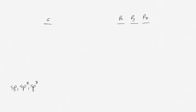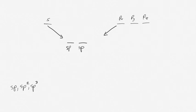sp orbitals are made from the s and one of the p orbitals. Remember that the p orbitals come in sets of three labeled px, py, and pz. If sp orbitals are made from one of each, the resulting hybrid orbitals have an energy that's in between the s and the p orbitals. After mixing, you have one s and one p orbital combined to make two sp orbitals.